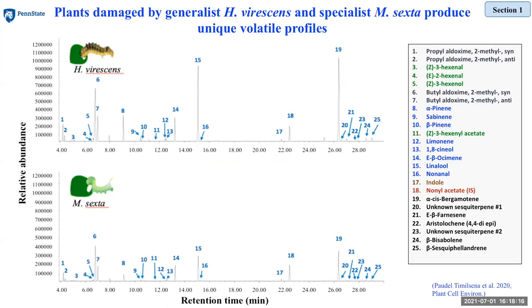These graphs, while not directly related to fall armyworm, show an example of volatiles produced by two different insect-damaged tobacco plants. Each peak represents an individual compound and the height of each peak represents the amount of that compound. If you pay close attention, some peaks are higher in one graph than the other, meaning some herbivores induce more volatile than others.